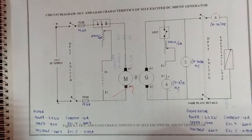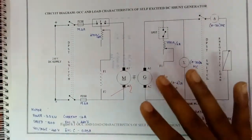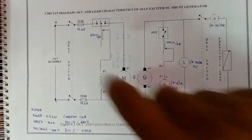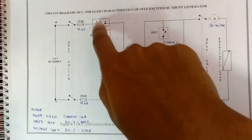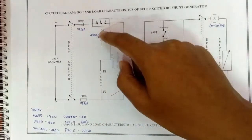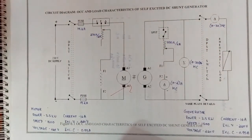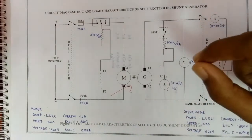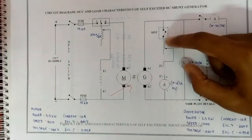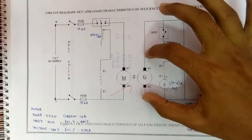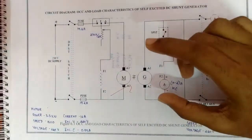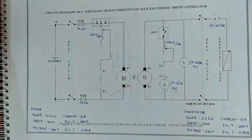The procedure for the OCC test is: first, the connection should be made as per the circuit diagram. By closing the DPSC switch 1 and using the 3-point starter, the motor is started. The motor field rheostat is adjusted and the rated speed is set. The residual voltage is noted down from the voltmeter. Finally, the generator field rheostat is varied and generated voltage EG and corresponding field current IF are noted down. The same procedure is repeated up to the rated voltage.